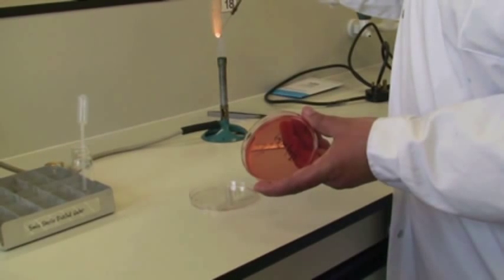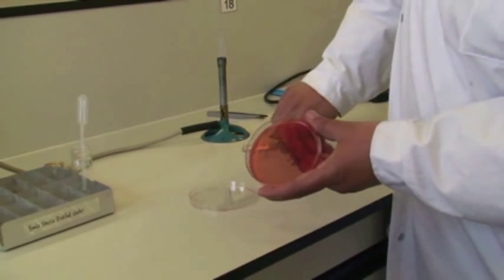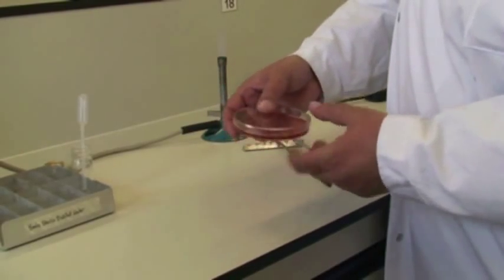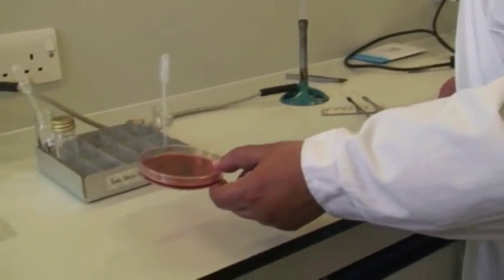Flame your bacteriological loop when you're finished, pop the lid back on, and it's going to be incubated, the plate with the API strip.